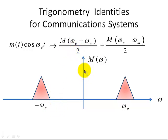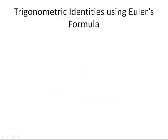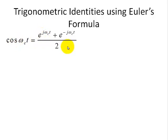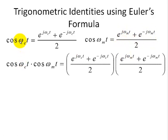Also note that the amplitude we started with was one, but when we multiply by cosine of omega C times T, it splits in half. Now we're going to take our trigonometric identities — the three shown earlier — using Euler's formula. We'll start off with cosine omega C of T defined by this Euler's formula, and then cosine omega M of T, which is our message, by the corresponding Euler's formula. We're going to multiply these two trig functions and substitute their corresponding formulas, as shown here. Now we simply perform algebra.